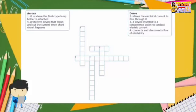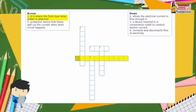Accomplish this crossword puzzle. Number one: it is where the flush-type lamp holder is attached. The answer is junction box.